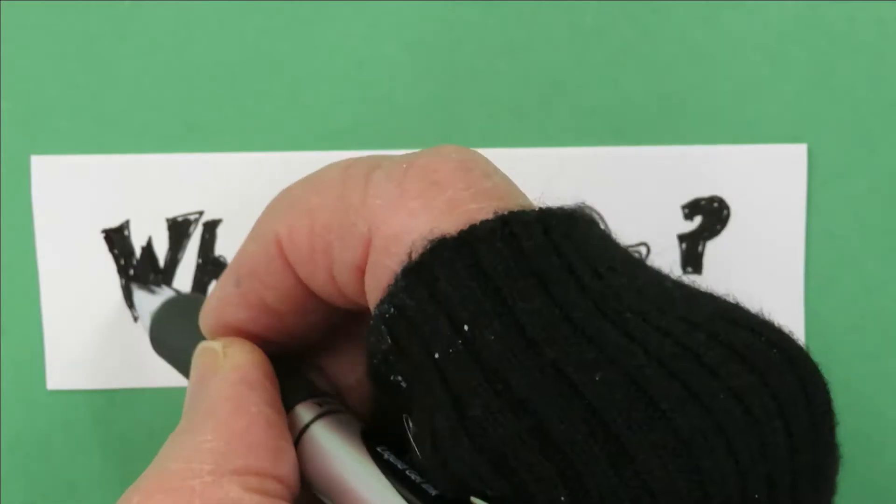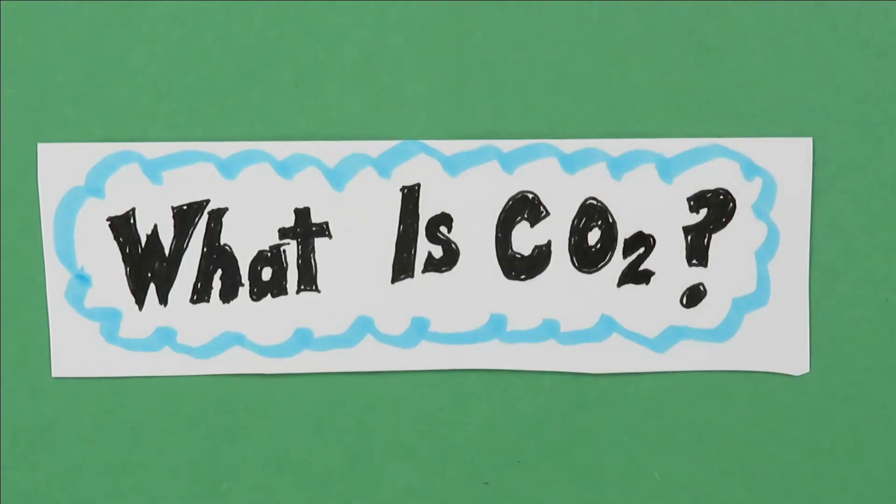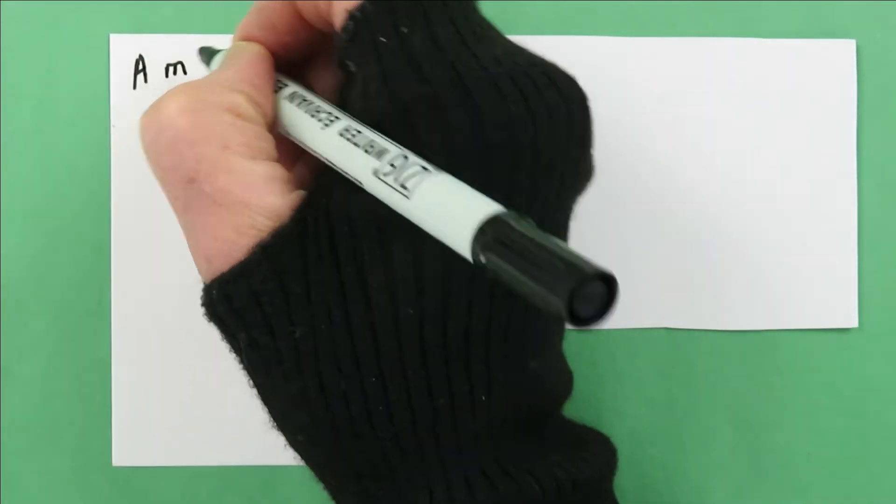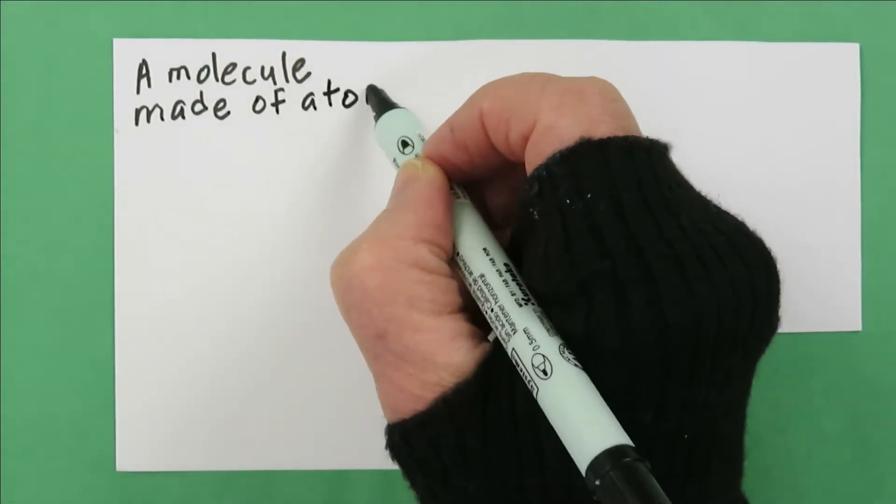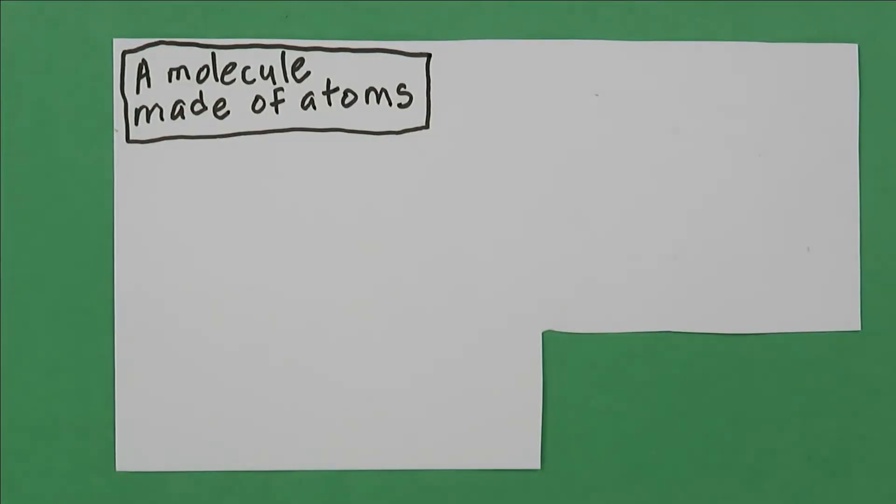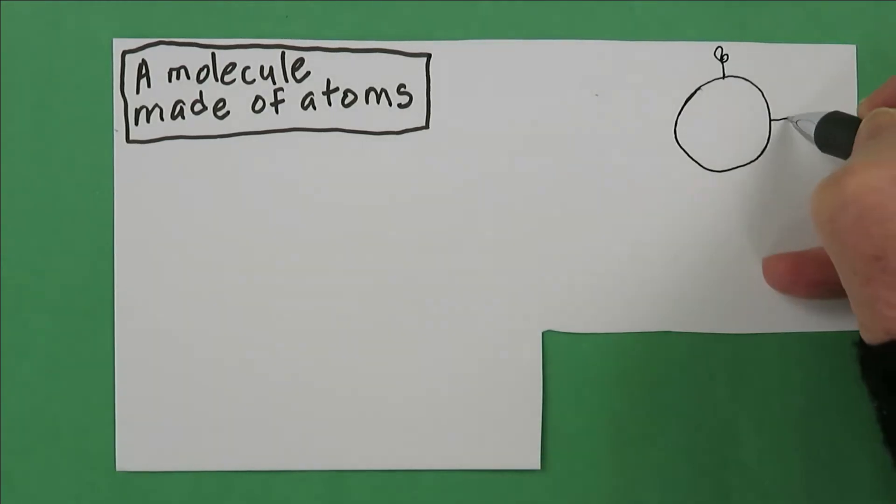The first thing we need to talk about is CO2. What is it? First, it's a molecule. Molecules are made of two or more atoms bonded together. The atoms we'll talk most about are carbon atoms, oxygen atoms, and hydrogen atoms.